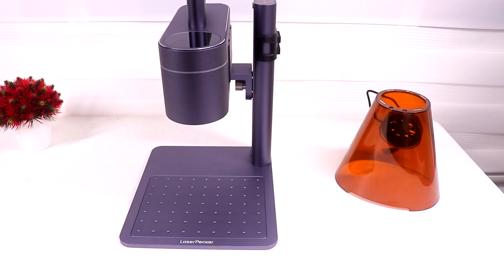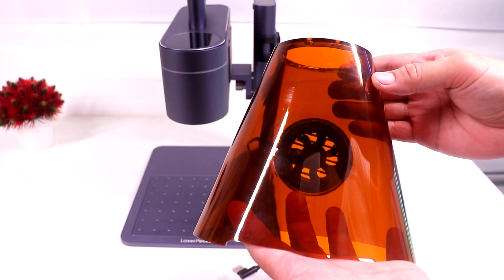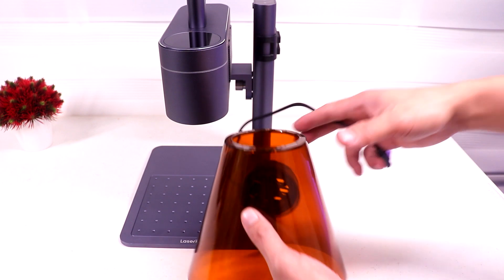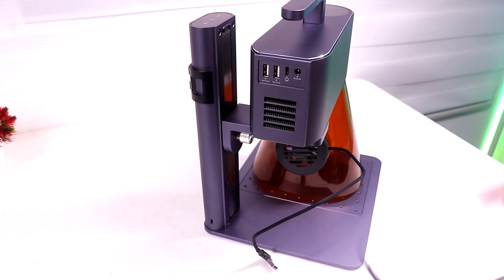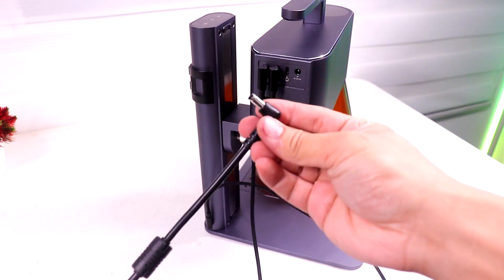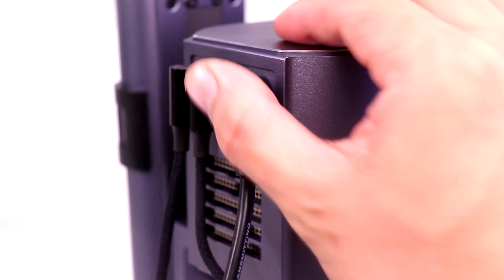And then attach the protective shield which is magnetic. And just make sure that these two holes from the shield and the Laserpecker lines up perfectly. And then use the cable to connect the arm and fan to the Laserpecker to obtain power. Then lastly, plug the power cable and you're good to go.